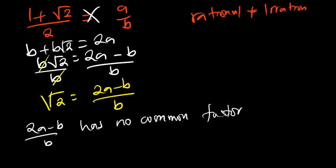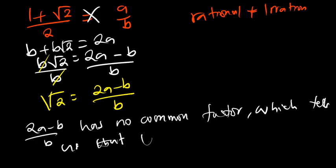So if 2A minus B divided by B has no common factors, this tells us — which tells us that it is rational.